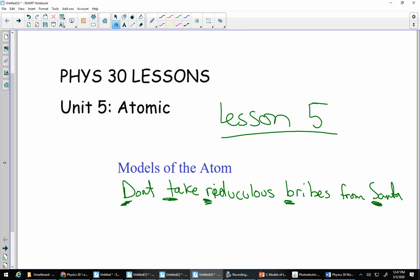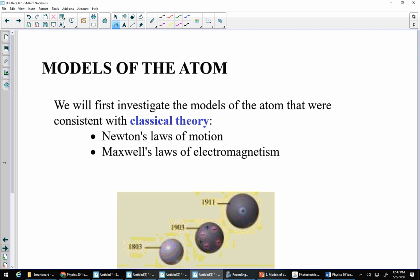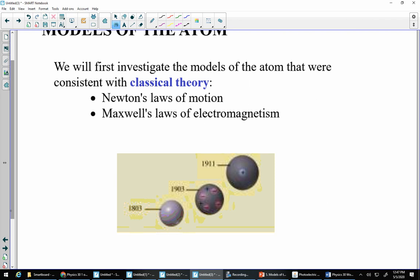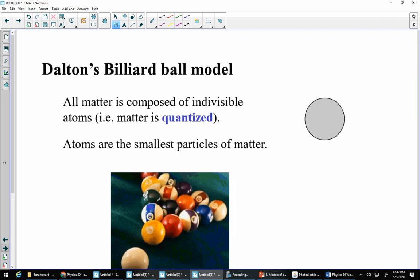So, we do need to know these scientists, and we need to know sort of where things all started off with, and where we got to. Again, the main focus in the next couple days is going to be the Bohr model of the atom, and the Schrodinger model of the atom. But it's difficult to talk about those without knowing where things came from. So, the models of the atom that we talk about today are going to correspond very nicely with the classical theory. So, classical theory of EMR talks about Newton's laws of motion and Maxwell's laws of electromagnetism.